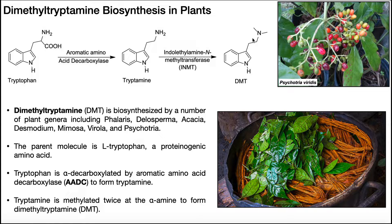Dimethyltryptamine being synthesized in plants is not by all plants — it's by specific genera, which include Phalaris, Delosperma, Acacia, Desmodium, Mimosa, Virola, and Psychotria. Over here you can see an example, Psychotria viridis, and it's the leaves that contain the most amount of DMT. Whenever it's being prepared, the leaves are often ground up and it's made from that powder.